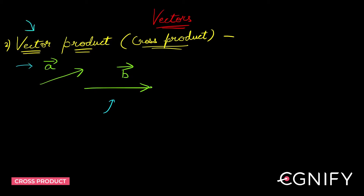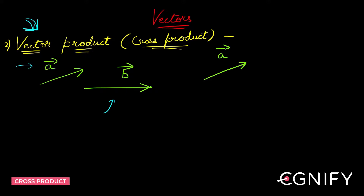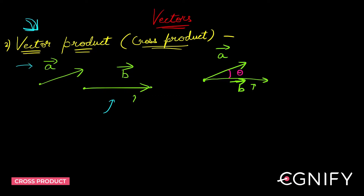Now we will see the next type of product — the vector product. When you have two vectors, can I multiply them? Yes. How do I find their vector product? We join the two vectors: we bring vector b to the same point as a, keeping the direction and magnitude of b the same. Now let the angle between these two be theta. We can define a product called vector product, denoted by a bar cross b bar.